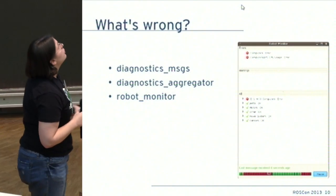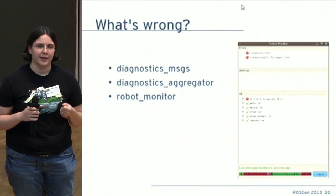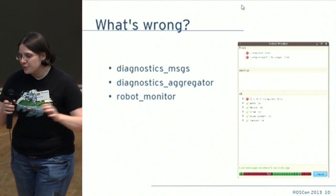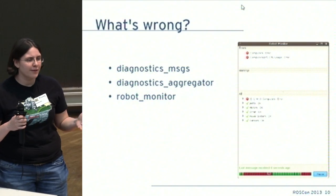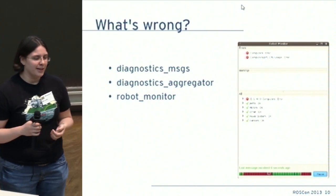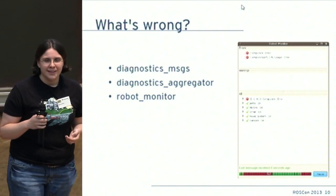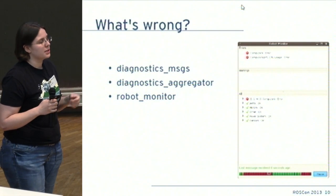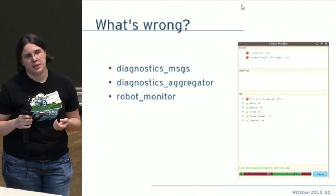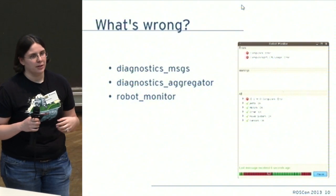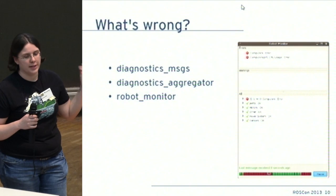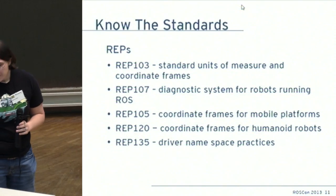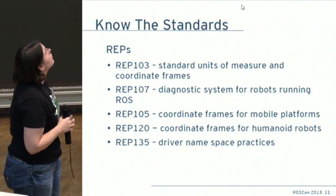When things start going wrong in a more complex robot, you should use diagnostics and the robot monitor. I've talked to at least ten people using their robots who said they really wished they had a way to look at diagnostics, and I'd tell them to use robot monitor and they'd never heard of it. Robot monitor is really cool — you use the diagnostic aggregator with a configuration file to make the monitor look nice, creating dropdowns and classifications for your diagnostics.